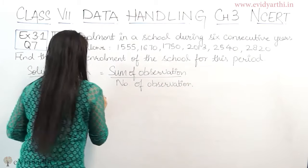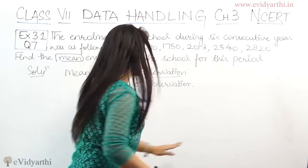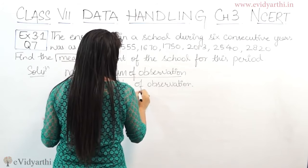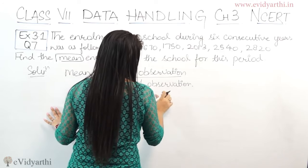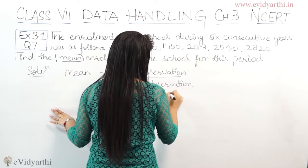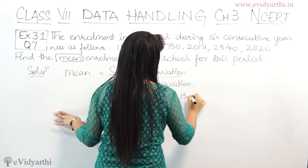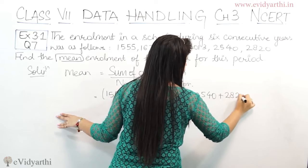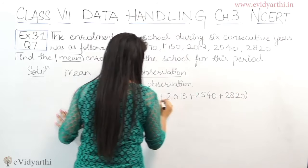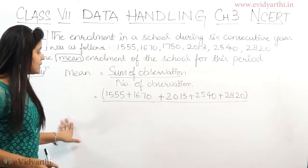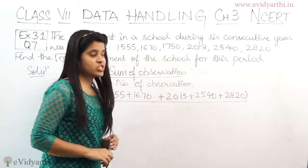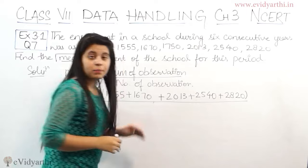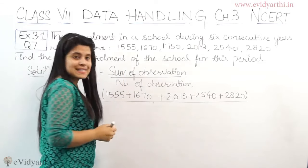Sum means you have to add the numbers. So this will be 1555 plus 1670 plus 2013 plus 2540 plus 2820. The number of observations — counting them: 1, 2, 3, 4, 5, 6 — so the total number of observations is 6. So we divide by 6.